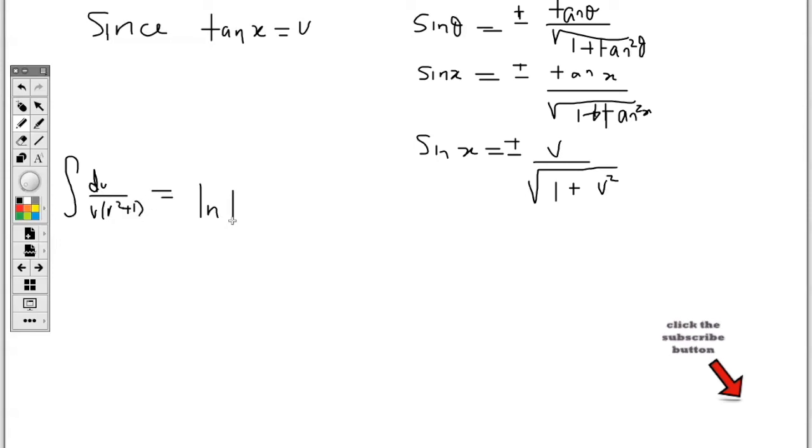v over the square root of 1 plus v squared is positive in order for it to work here. So for this, I'm going to forget about the plus or minus here and replace sin x with v over square root of 1 plus v squared. That's what's going to be here. So this will be the integral. Because remember, the question asks us to integrate 1 over v times v squared plus 1 with respect to v, and we have done it using trig identities to assist us.